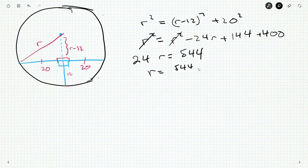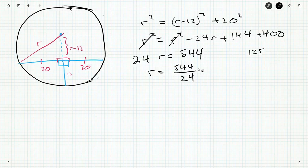So 24R is 544. R is going to be 544 over 24. I can definitely divide by 4 on the top and bottom. So 125 plus 11. So 125 plus 11 is 136. So we have 136 on the top over 6 on the bottom. I can divide by 2 again.